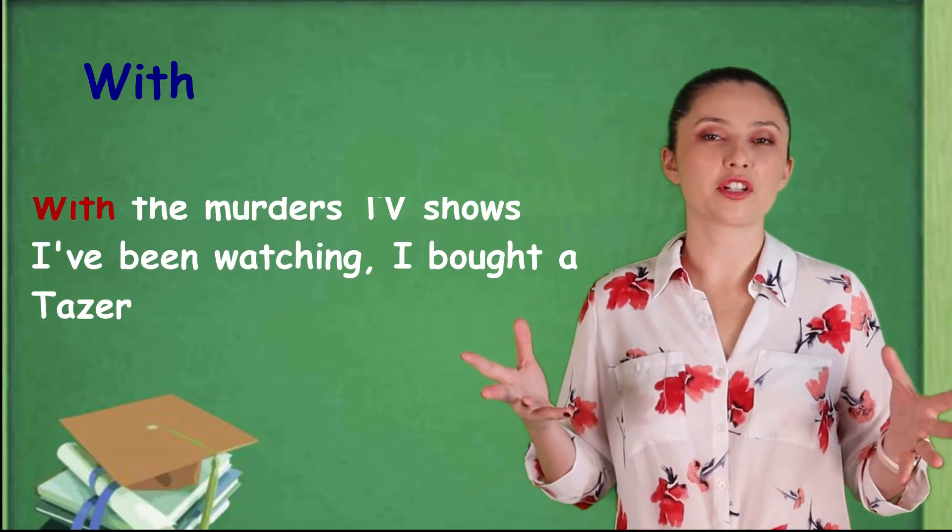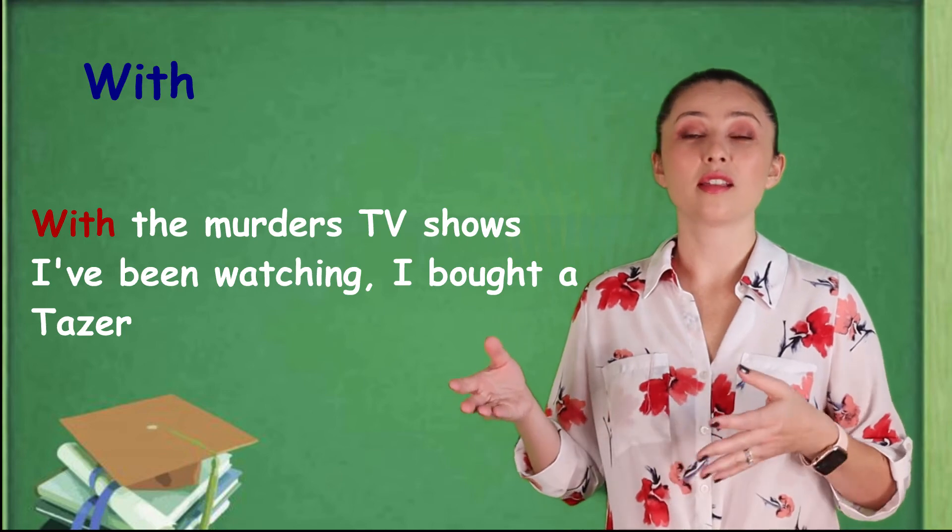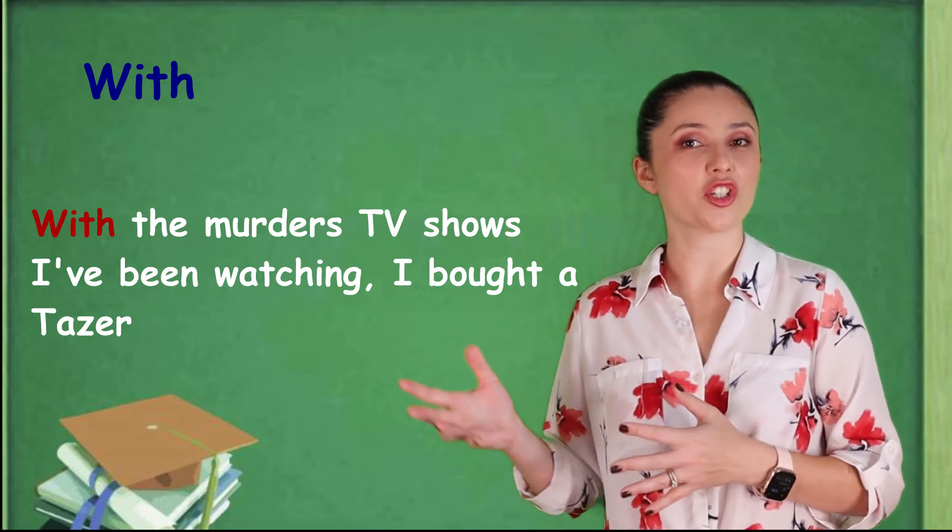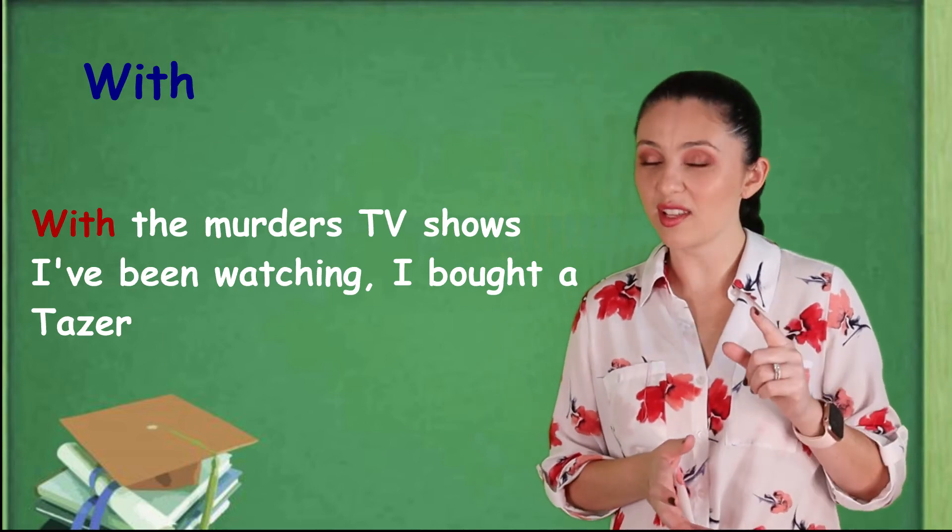Or, instead of saying because of, I can use a preposition with. With all the murders TV shows I've been watching, I bought a taser. With all the murder TV shows I have been watching, I bought a taser. Which is actually true.